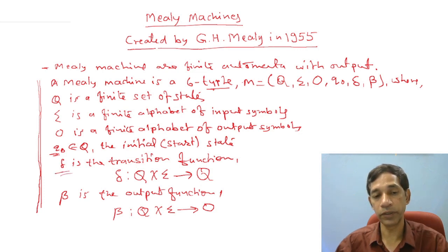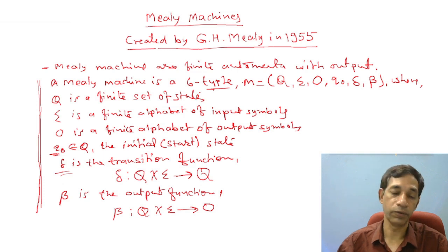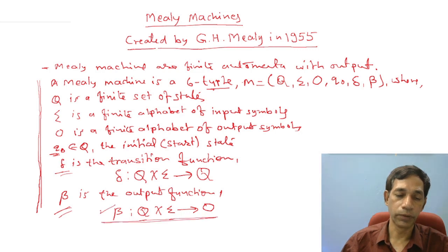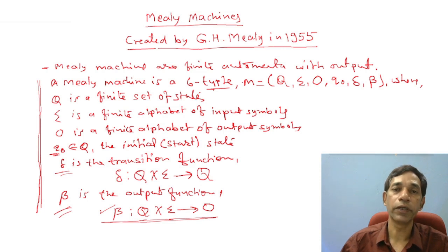Delta (δ) is the transition function. Its input is a state, and from every state you may have some input from Σ. On behalf of this, your machine transits from one state to another — the output of delta is an element from Q. Beta (β) is the output function, and you can define β as taking a state and an input symbol.